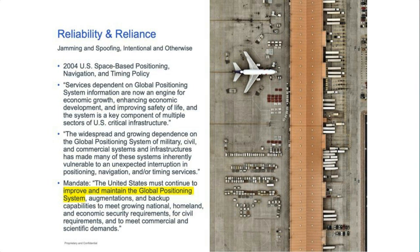Space weather and other challenges also threaten GPS's reliability. Because our reliance on it is tremendous, that reliance puts us at risk. So in 2004, George W. Bush's White House issued the U.S. Space-Based Positioning, Navigation, and Time Policy, focused on mitigating our vulnerability. At that point, most infrastructure was already based on GPS technology, and civil and military systems were vulnerable to interruption of service that could cause anything from inconvenience to catastrophe.